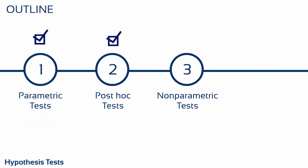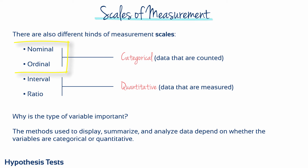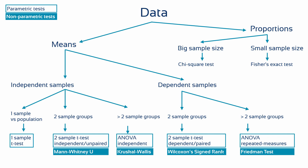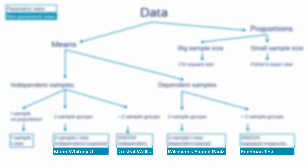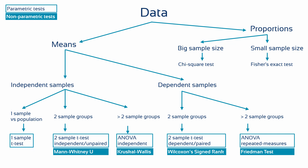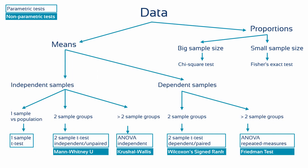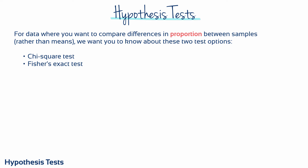Data that are observations of nominal or ordinal scales, or have deviations in skew or kurtosis, are not normally distributed and therefore non-parametric. If you have non-parametric data and wish to compare means, you would go through the same decision process but switch to an equivalent non-parametric test with different underlying mathematics. For data where you want to compare differences in proportion between samples rather than means, the two test options are the chi-square test and Fisher's exact test.